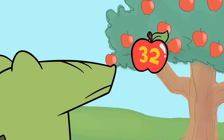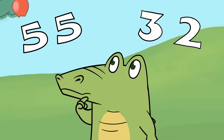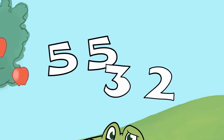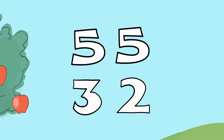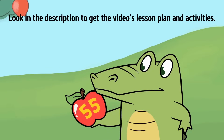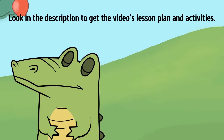55 and 32 — the Gator needs to eat the one with the greater value. He looks at the place values from left to right. 5 is the greatest tens place, so he takes a big bite.